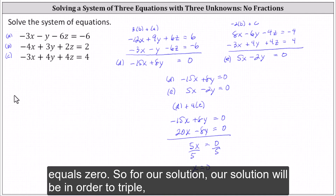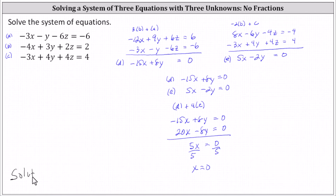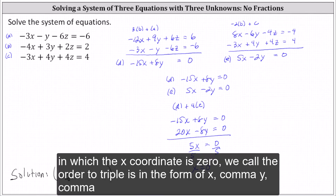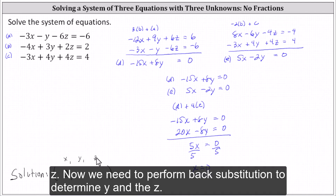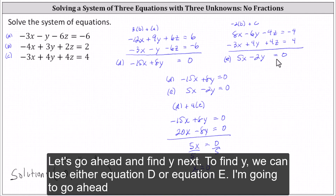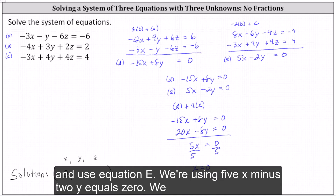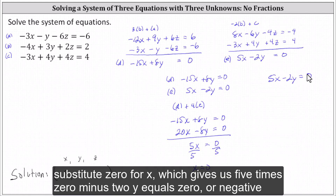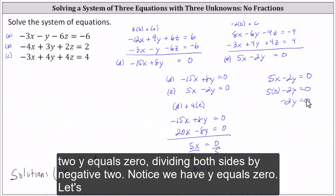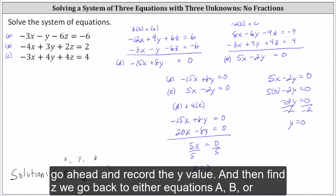So for our solution, the ordered triple will have X coordinate zero. Recall the ordered triple is in the form X, Y, Z. Now we need to perform back substitution to determine Y and Z. Let's find Y next. Using equation E — five X minus two Y equals zero — we substitute zero for X, which gives us five times zero minus two Y equals zero, or negative two Y equals zero. Dividing both sides by negative two, we have Y equals zero.